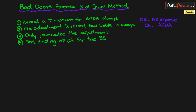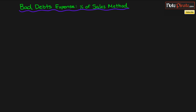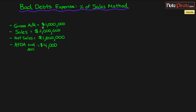Let's close up the rules and go through the example. We have gross receivables of $1 million, sales of $2 million, net sales of $1.8 million. The Allowance for Doubtful Accounts ending balance for 2011 is $4,000 — a credit balance — and we're in the year 2012. First, throw up the AFDA T-account. The ending of 2011 is the same as the beginning of 2012, so write that $4,000 in as the beginning balance.